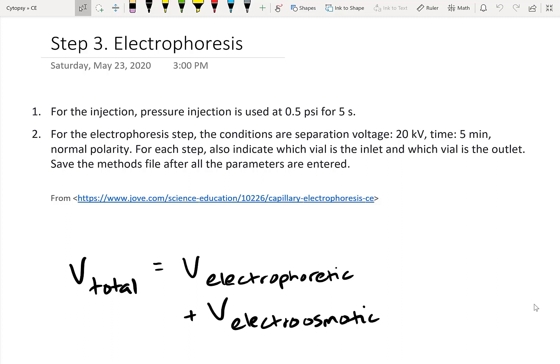Alright, so step three is to actually do the electrophoresis. And what's shown here is that we're going to inject using some pressure. The injector needs some pressure - there's also ways of injecting without pressure, but we're not going to really cover that here. And after we inject the samples, you can see here there's a positive 20 kilovolt electric field. The time is really short, it's only five minutes, and we're running in normal polarity. Now we've been talking about normal polarity for a long time, and I really want to explain it here.